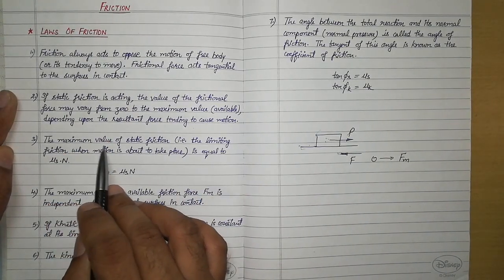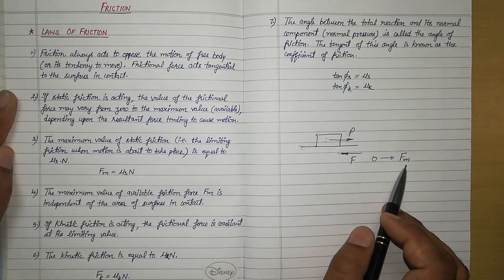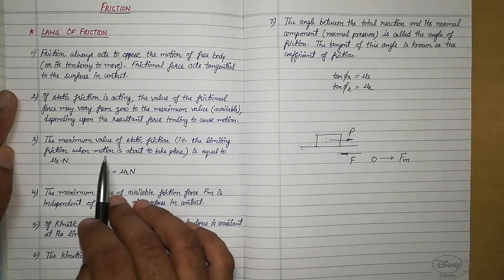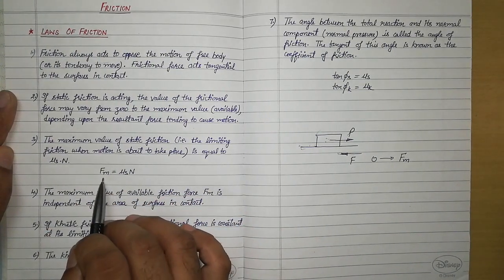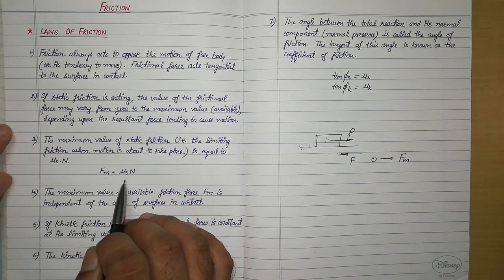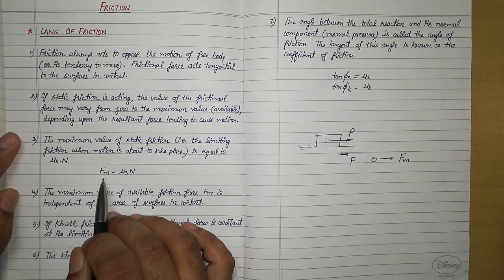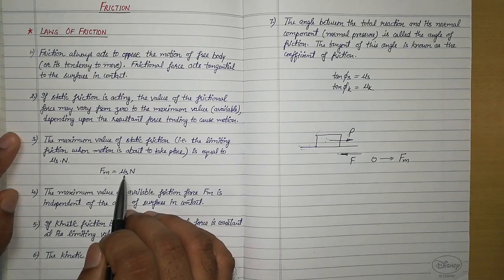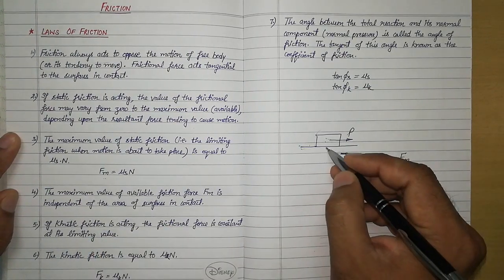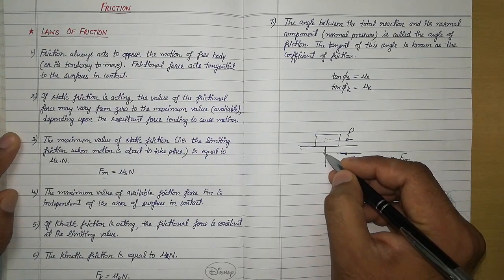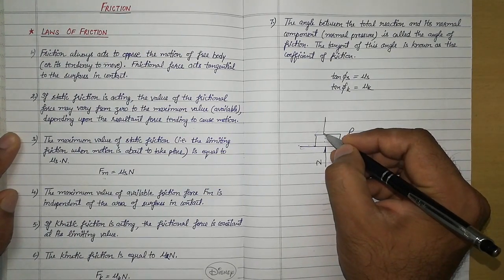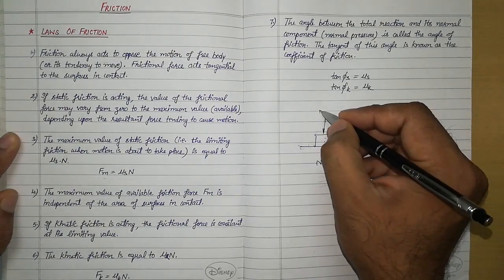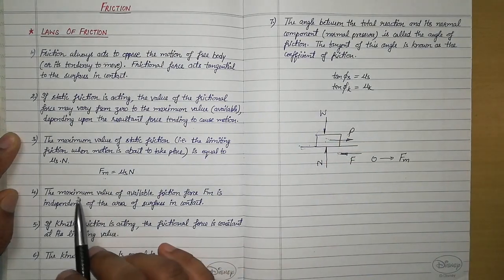The maximum value of static friction, that is limiting friction fm, when motion is about to take place, is equal to μs·N. Here, fm is the maximum static friction available, μs is the coefficient of static friction, and N is the normal pressure which acts at 90 degrees to the surface — the result of the weight of the body.